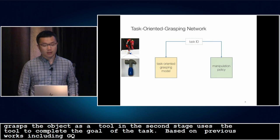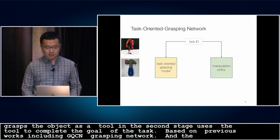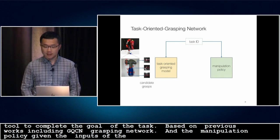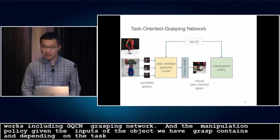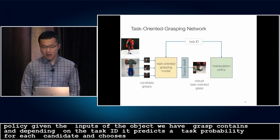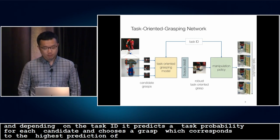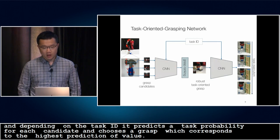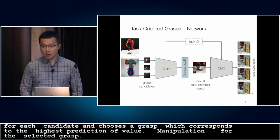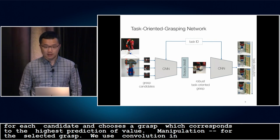The network is composed of a task-oriented grasping model and the manipulation policy. Given the visual inputs of the object, we sample multiple grasp candidates, and depending on the task ID, our task-oriented grasping model predicts the task success probability for each candidate and chooses the grasp with the highest predicted value. The manipulation policy then outputs the action for the selected grasp. We use convolutional neural networks for both modules, taking depth-crops for each grasp candidate as inputs.